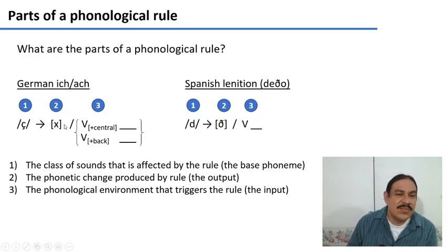The second part of the rule is the phonetic change that is produced by the rule, essentially the output of the rule. So you take something in and then you produce a velar fricative in German or the ð in Spanish.